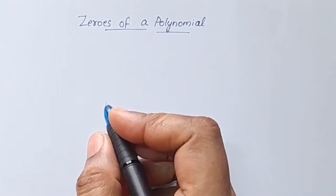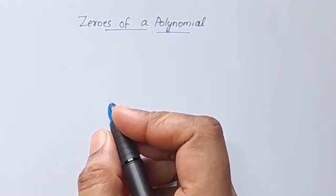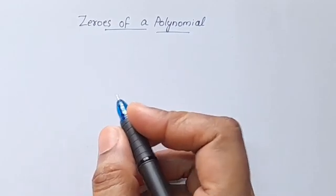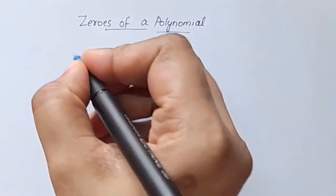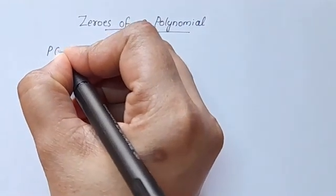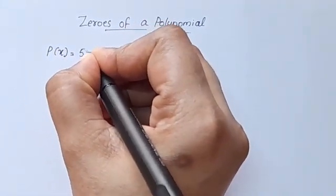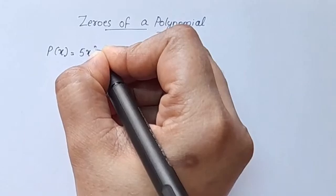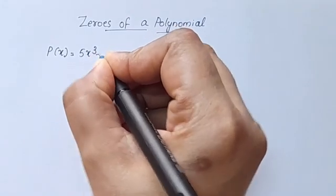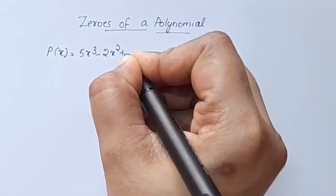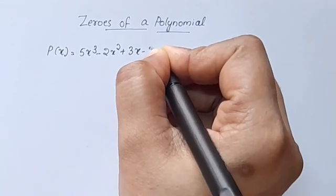In this video on zeros of polynomials, we will look at a polynomial. Now, P of x is equal to 5x cubed minus 2x squared plus 3x minus 2.